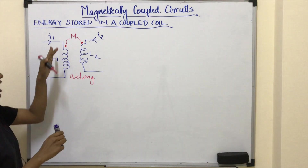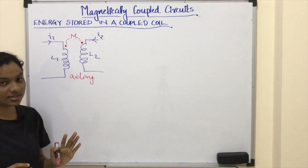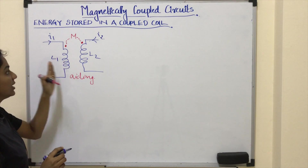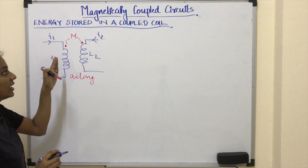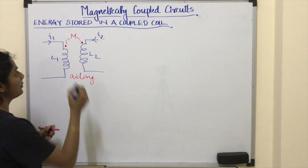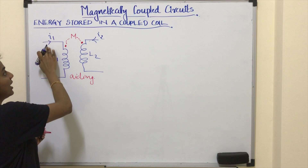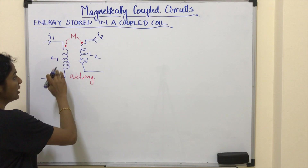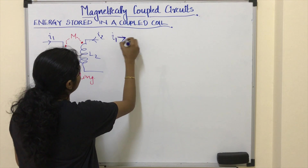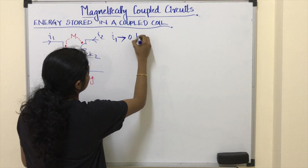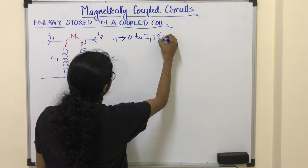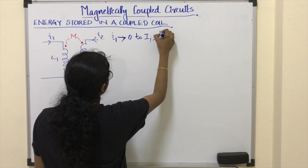Initially I1 and I2 are 0, which means the energy stored in the circuit is 0 initially. Now I am going to increase the value of current passing through the first coil, that is I1, from 0 to I1, while maintaining I2 equal to 0.